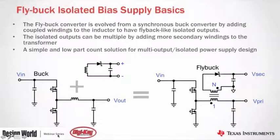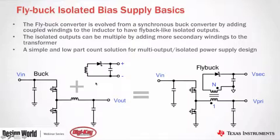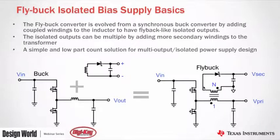The fly buck name comes from a combination of concepts. It is primarily a synchronous buck converter, but we add an extra winding to the inductor to create an isolated output very similar to a flyback — that's where we get the term fly buck. The complete fly buck circuit has a single isolated output, but you can easily add additional windings to the secondary to get multiple outputs. This is a simple, low part-count solution for isolated and multi-output power supply bias design with no opto-isolator required.